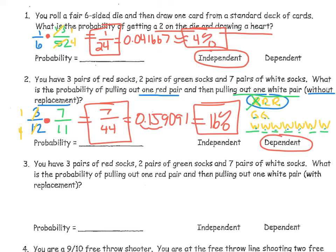Those are dependent events because the second event changed based on what happened in the first event. Now let's look at another example with the same setup: 3 pairs of red socks, 2 pairs of green socks, and 7 pairs of white socks. What is the probability of pulling out one red pair and then one white pair, but this time with replacement? Since you're replacing the first pair, the same number of socks remain in the drawer, so the probability of the second event has nothing to do with the first. These are independent events.